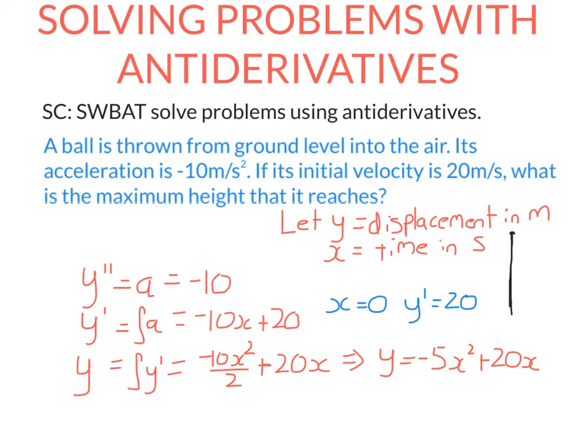So we can use either of these functions to find the maximum height that it reaches. The derivative of this is when this equals 0. So if the velocity equals 0, that would mean that x is just equal to 2, because minus 20 plus 20 is equal to 0.